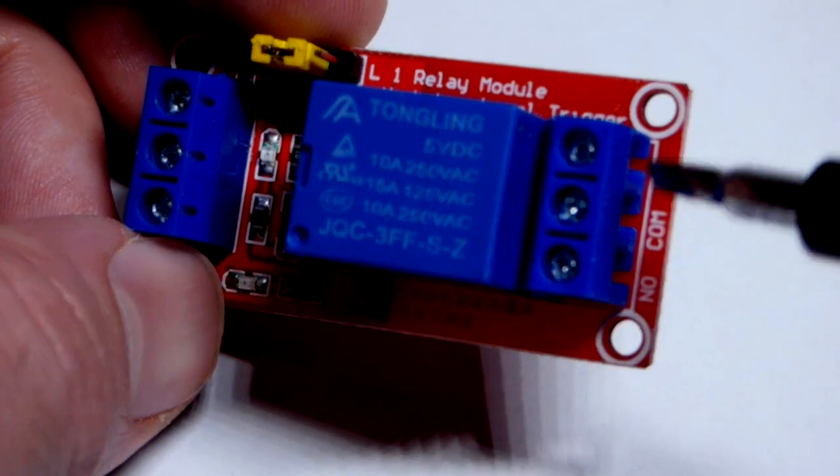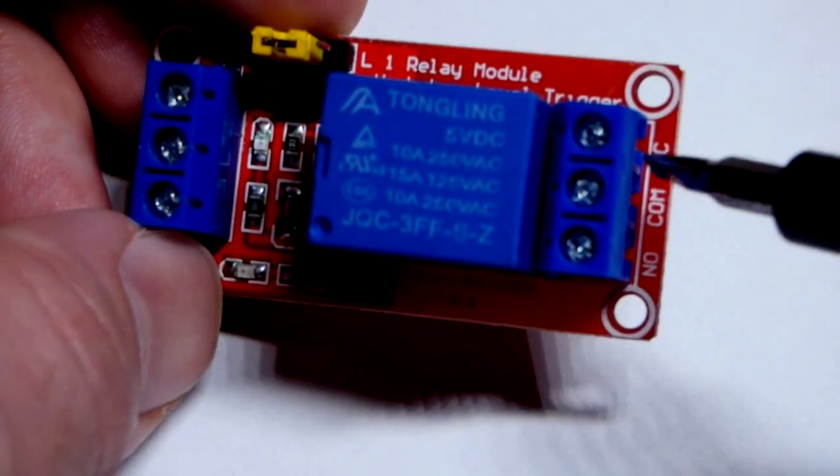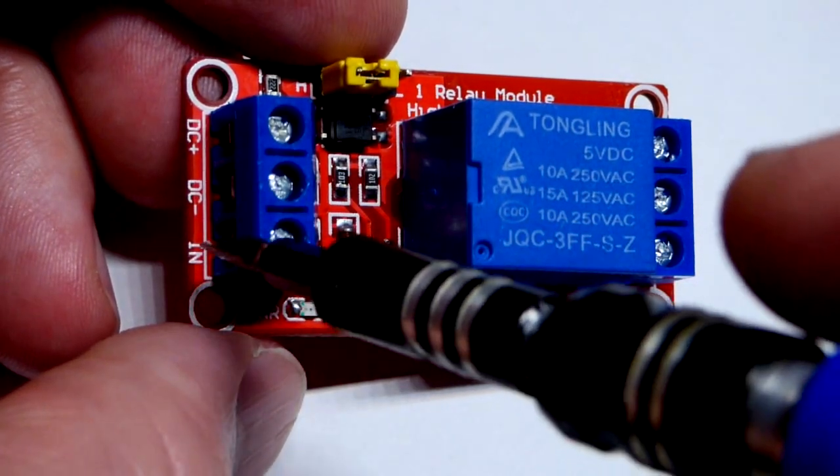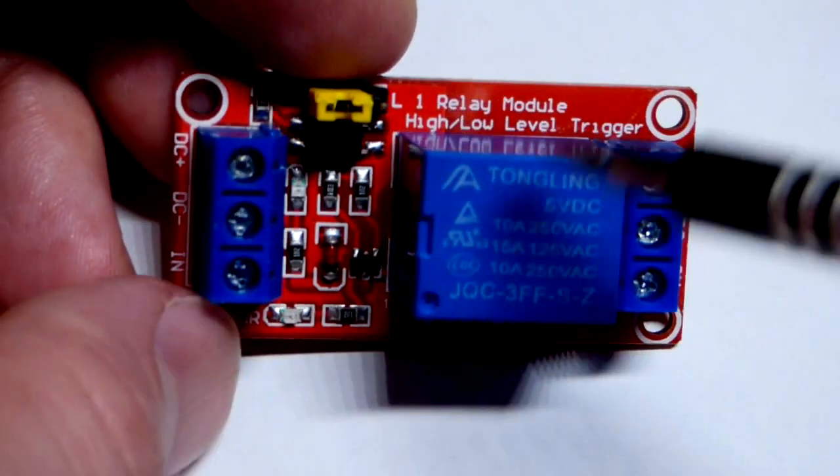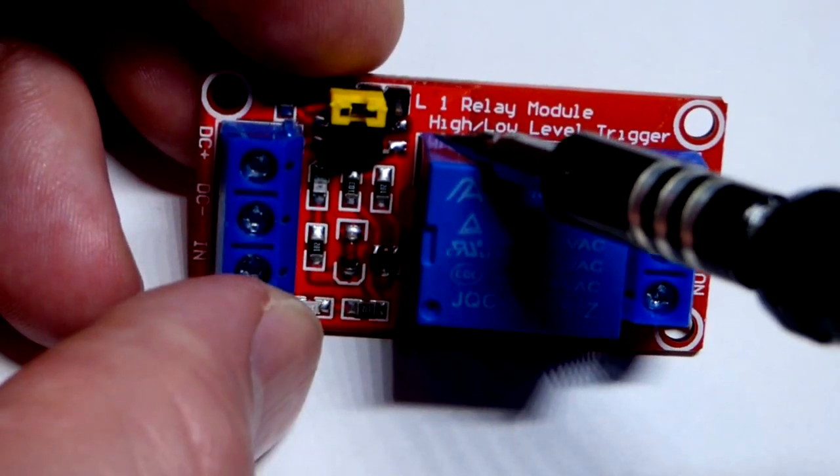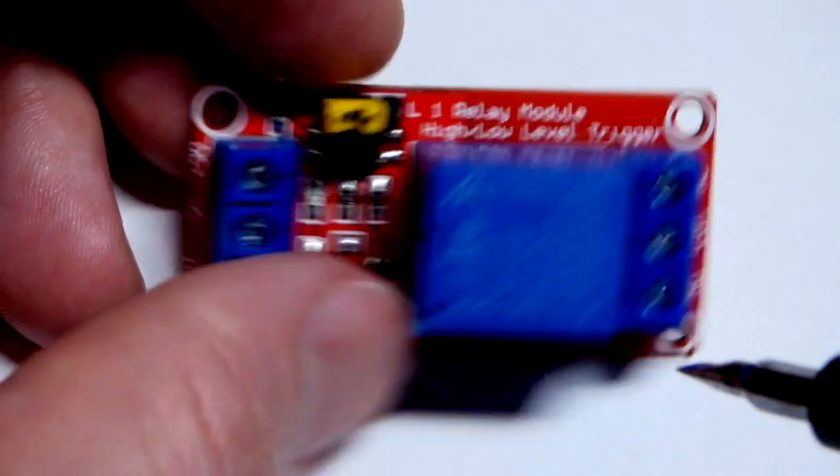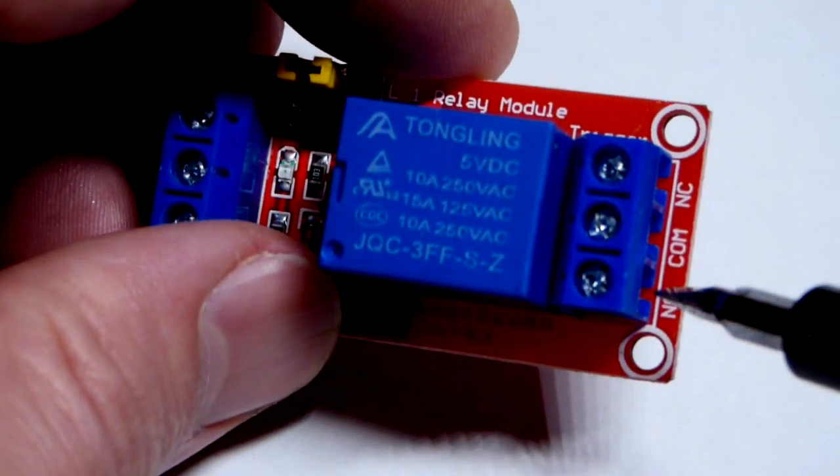The load you can power with a different power supply if you want, doesn't matter. This just switches it. But we have to power it and then you give it a signal coming in. This one you can change whether it is a high level trigger or whether it's a low level trigger.